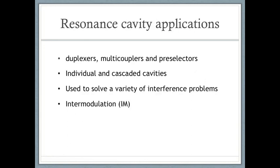Resonant cavity filters are essential for the design of duplexers, multi-couplers, and pre-selectors, though their use is not limited to these applications. Individual or cascaded cavities may be used for a variety of interference problems, such as cleaning up the performance of existing filter systems that lack sufficient isolation or off-channel rejection, and rejection of signals from other sources at crowded antenna sites. Cavity filters are ideal for quieting noisy transmitters or preventing transmitter intermodulation (IM) mixing — the undesired combining of signals in a non-linear device producing new unwanted frequencies.